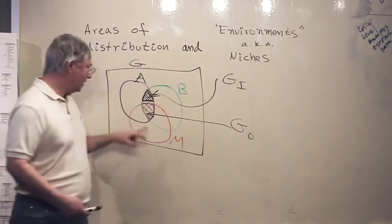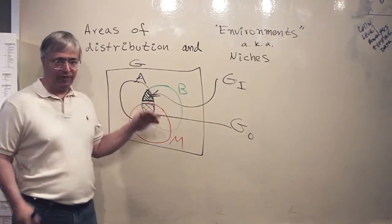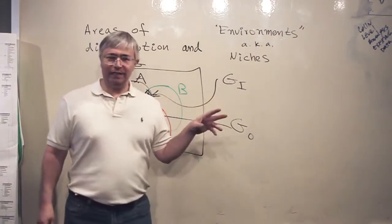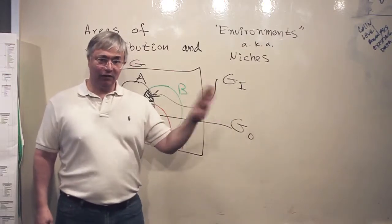GO represents an area of distribution where the species is actually found, and GI is an area where the species can invade but is not still there.